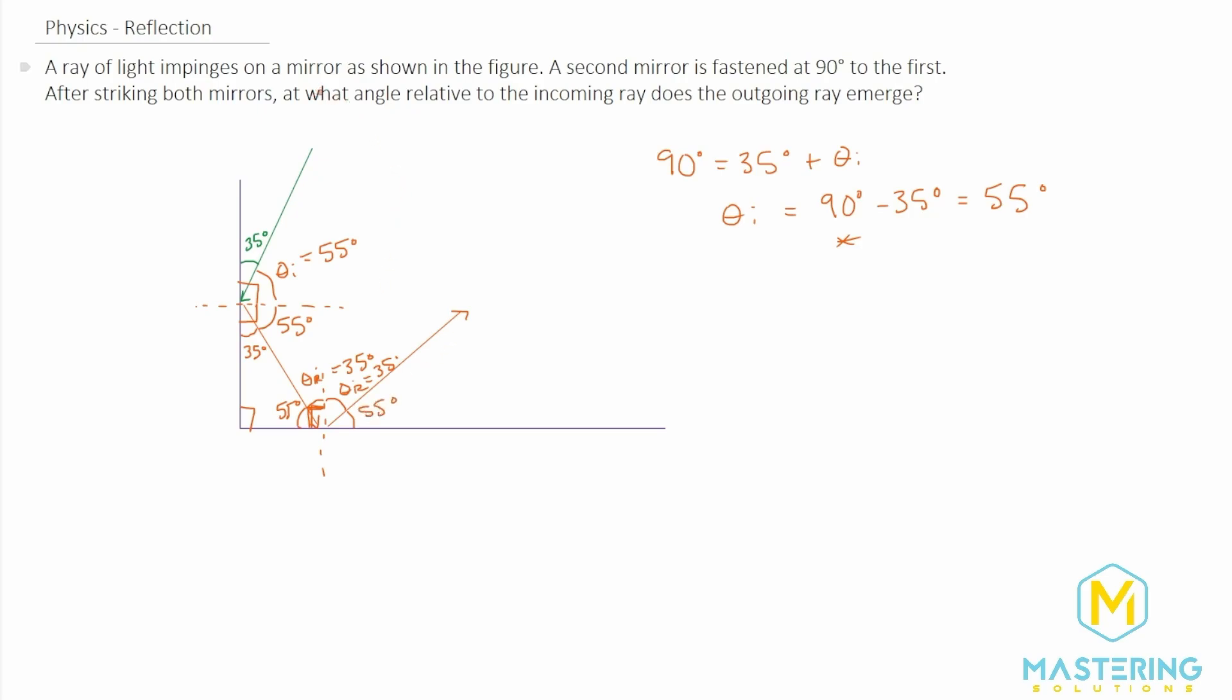So at what angle relative to the incoming ray does the outgoing ray emerge? So now we have figured out all of the angles in our figure here, but what is the answer then? And it all depends on what it's in relationship to. If we're talking about the vertical, in relation to the vertical, in relation to this mirror here...